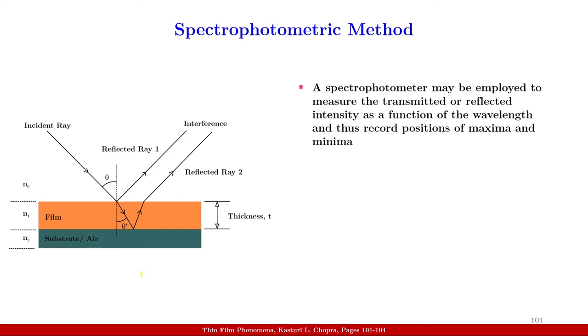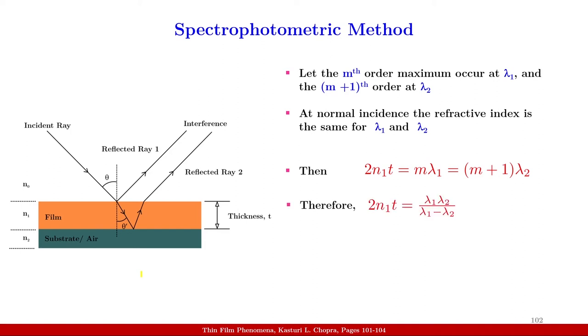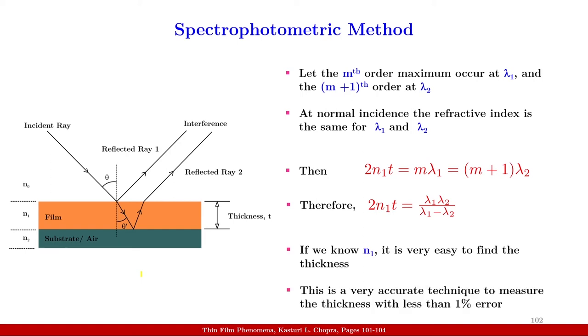A spectrometer may be employed to measure the transmitted or reflected intensity as a function of the wavelength and thus record positions of maxima and minima. Let the Mth order maximum occur at lambda 1 and the M plus 1th order at lambda 2. At normal incidence, the refractive index is the same for lambda 1 and lambda 2. Then 2N1t equal to M lambda 1 which is equal to M plus 1 lambda 2. When we rearrange this equation, we will get 2N1t equal to lambda 1 lambda 2 over lambda 1 minus lambda 2. If we know N1, it is very easy to find the thickness. And this is a very accurate technique to measure the thickness with less than 1% error.